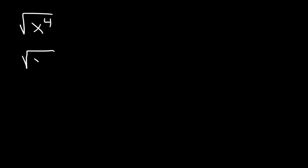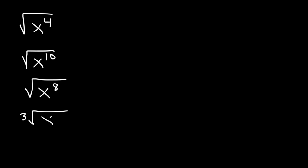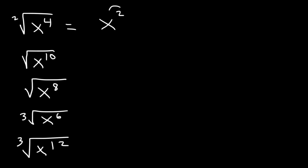Go ahead and simplify the following examples: the square root of x to the fourth, the square root of x to the tenth, the square root of x to the eighth, the cube root of x to the sixth, and the cube root of x to the twelfth. For the first one, 4 divided by 2 is 2, and because the exponent is even, we don't need to use absolute value notation.